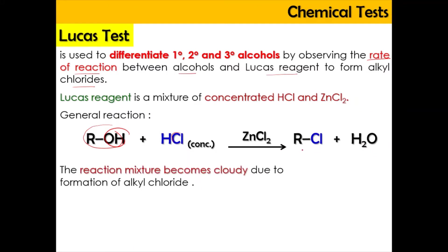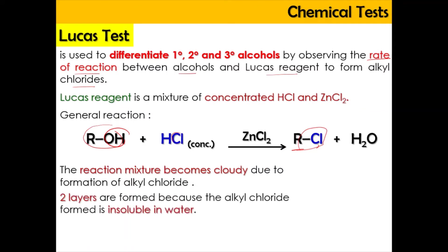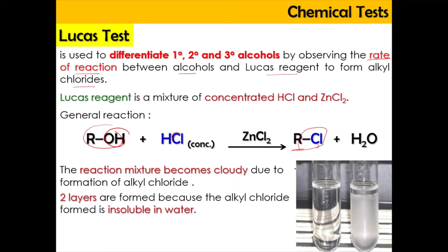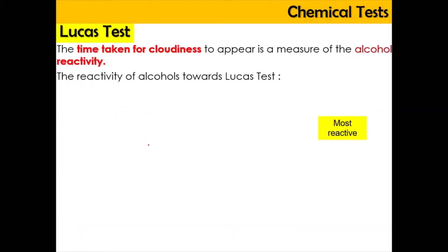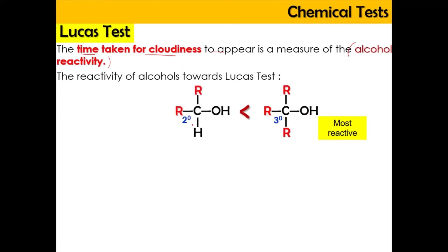The alkyl chloride produced causes the solution to turn cloudy, and two layers form because alkyl chloride is insoluble in water — no hydrogen bonding can be formed. The cloudiness appears as two layers of alkyl halide and water. Regarding the Lucas test, we look at the time taken for cloudiness to appear, which relates to alcohol reactivity. The reactivity order is: tertiary alcohol is most reactive, followed by secondary, then primary.